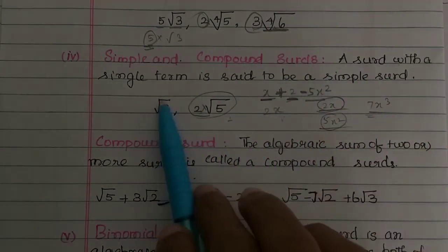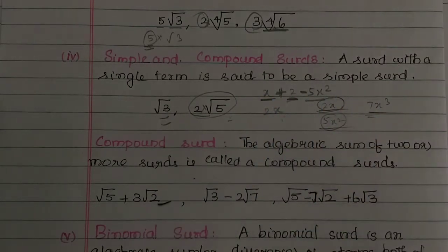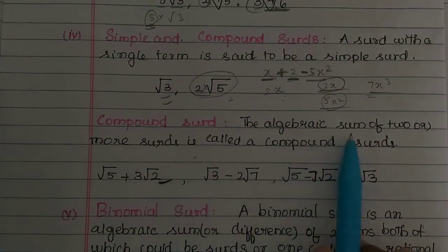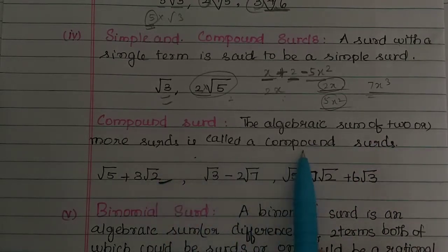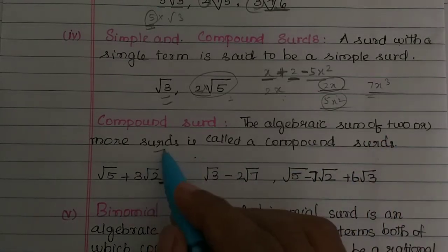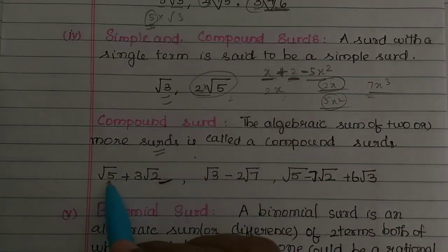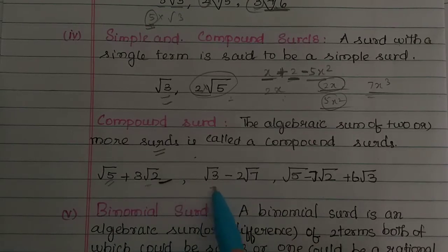A surd with a single term is a simple surd. The algebraic sum of two or more surds is called a composite surd.